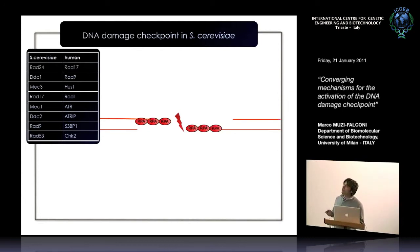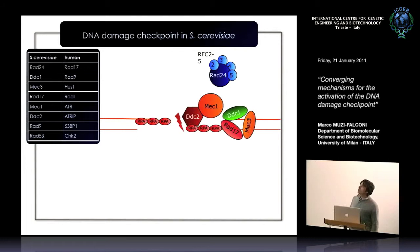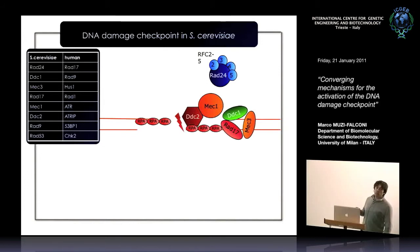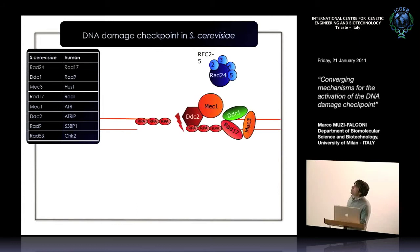When the lesion is identified on the DNA, the first thing that happens is that two protein complexes are recruited to this lesion. This is the DCO2-MEC1 complex — the apical kinase, which corresponds to ATR in human cells — and it's the first kinase in the checkpoint cascade. This is the 911 complex, also called 911 in human cells. They are recruited independently on the lesion. Once the kinase is recruited, it starts phosphorylating targets, and the first phosphorylation event we can see is the phosphorylation of the DC2 subunit.